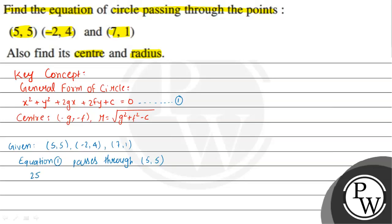We get 25 + 25 + 10g + 10f + c = 0, which simplifies to 10g + 10f + c = -50. We consider this as equation 2.